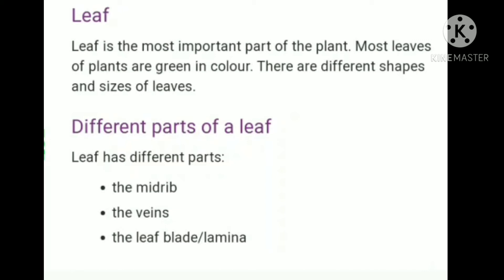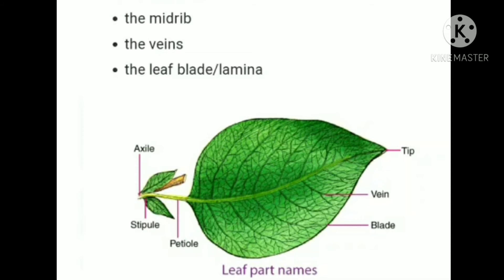A leaf has different parts: the midrib, the veins, and the leaf blade or lamina. See this picture of a leaf — different parts of the leaf are labeled here. Each leaf is connected to the stem. Between the stem and the leaf there is a long stalk — that is called the petiole. The part of the leaf by which it is attached to the stem is called the petiole.